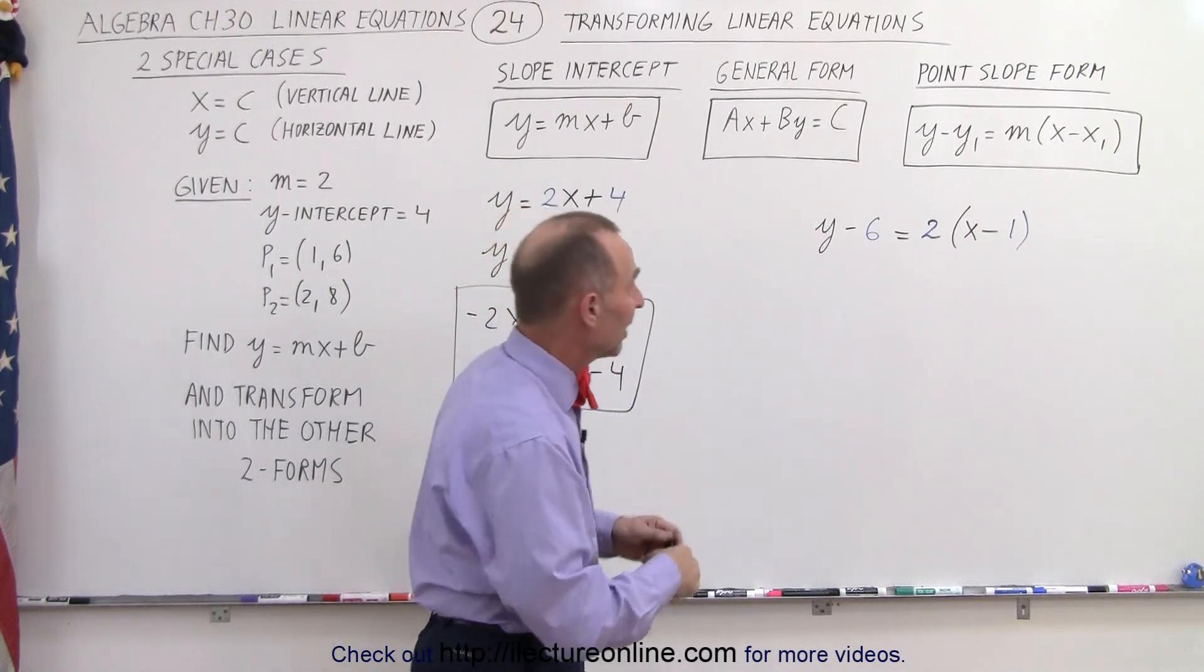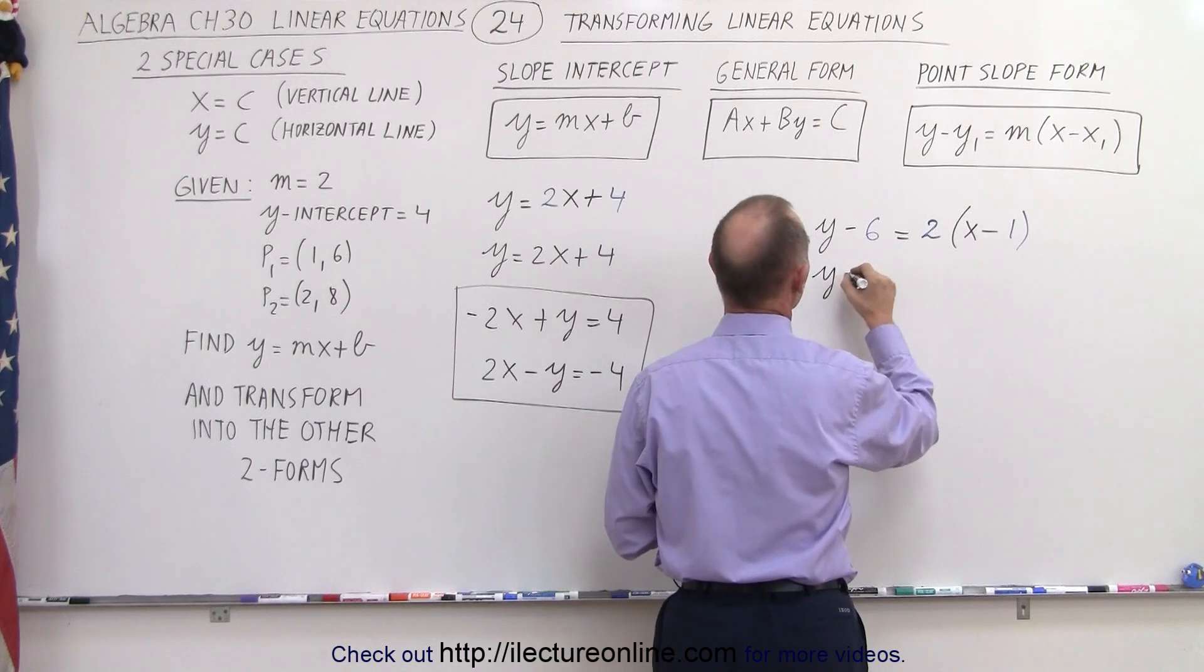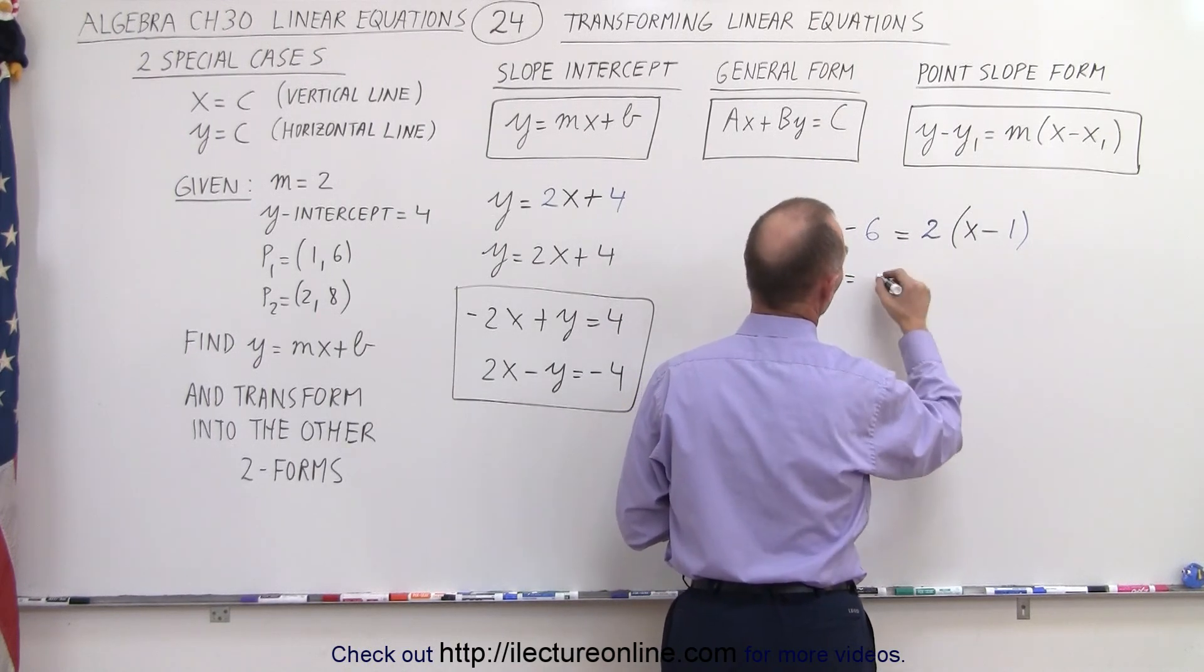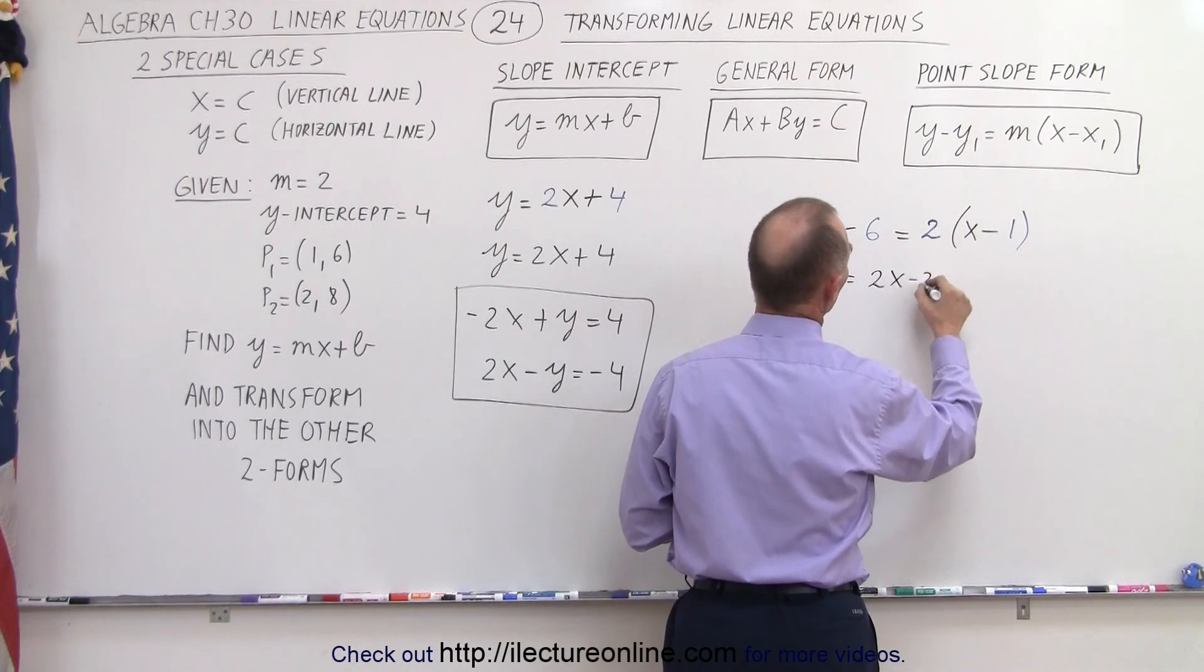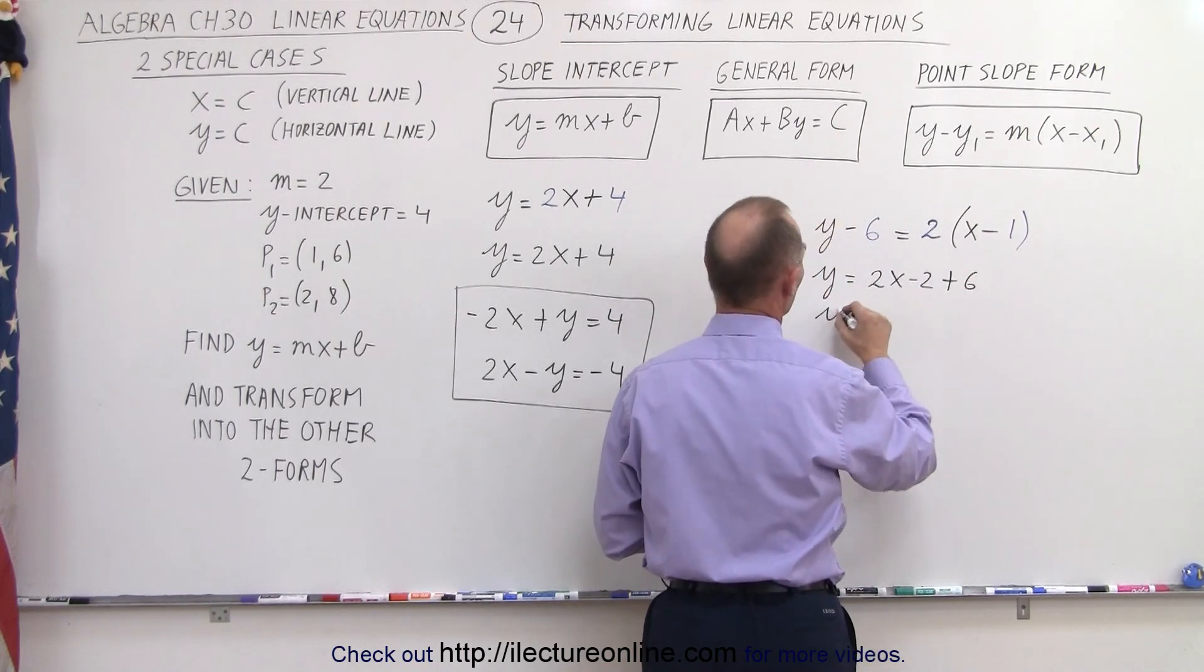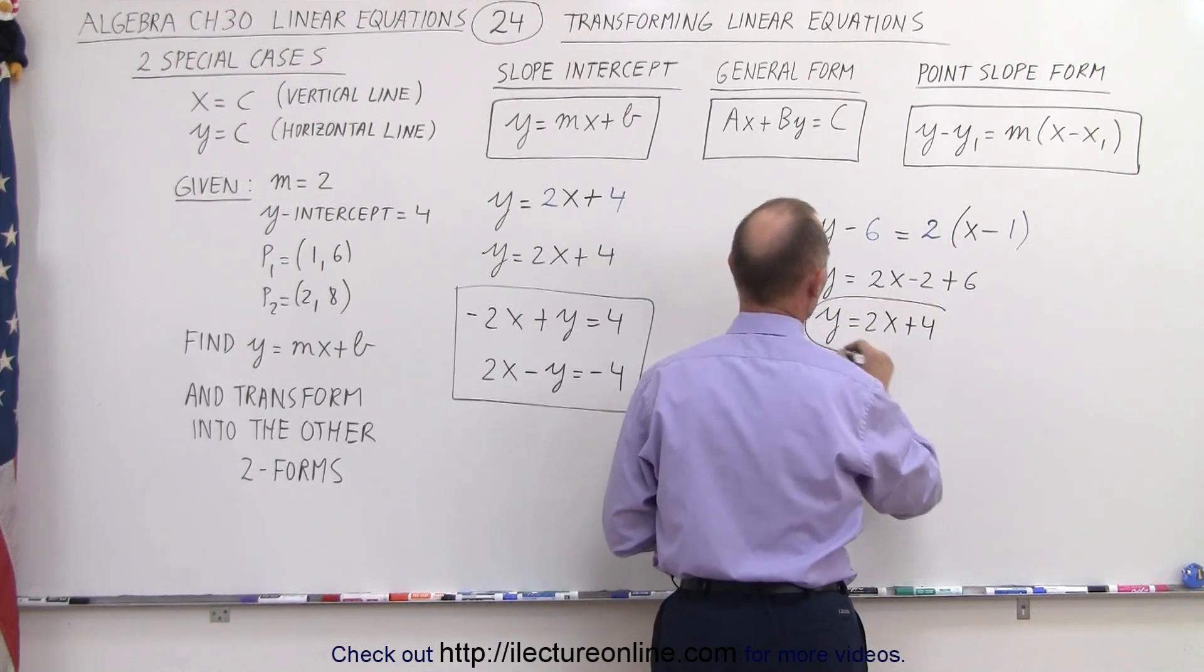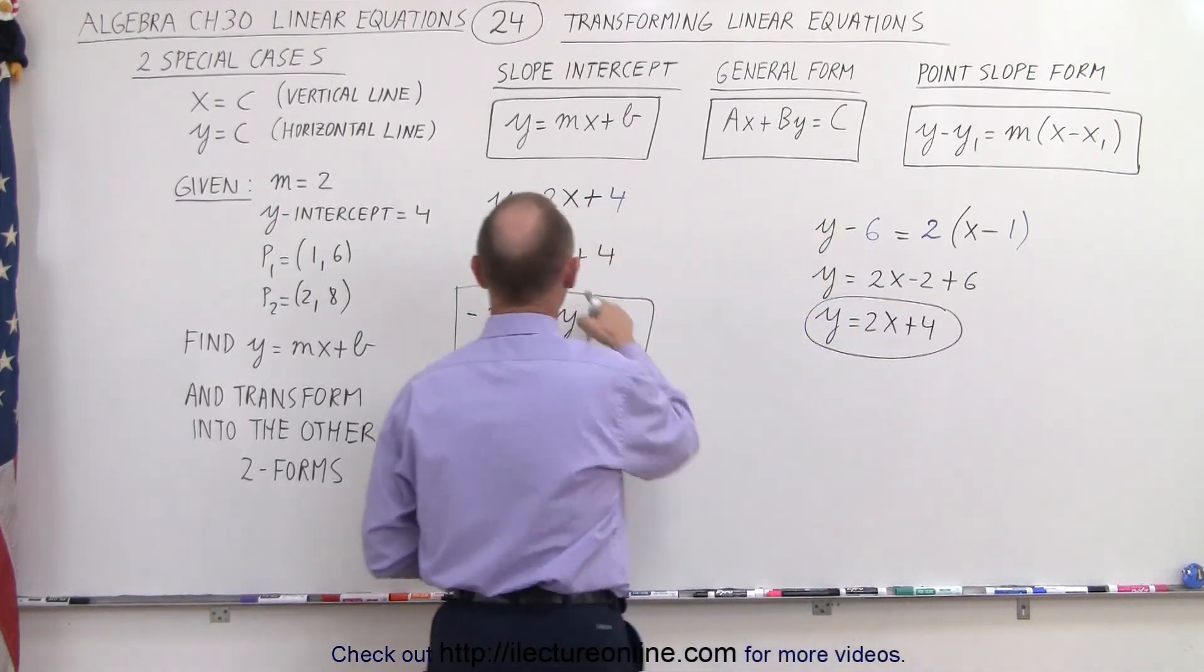Now, of course, we can simplify that, and we can move the negative 6 across. So notice that we have y is equal to, multiply this out, we get 2x minus 2, and the negative 6 across becomes plus 6, and so end up with y is equal to 2x plus 4. And notice that is the very same equation that we had over there.